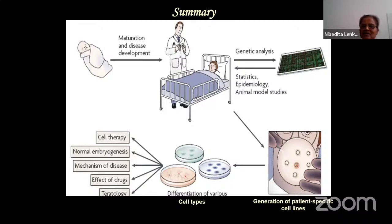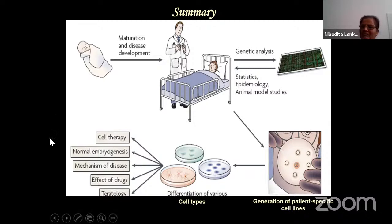To summarize: you can have stem cells in culture - I tell my students you not only have to look at them, you have to feel the cells, talk to them, then cells should behave. Once you get the cells, you can have a battery of implications: cell therapy, studying normal immunogenesis, mechanism of disease, drug targeting, normal development, teratology, and early development studies.